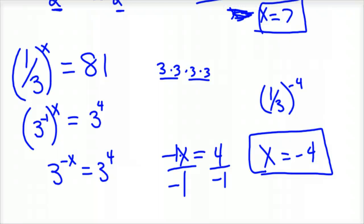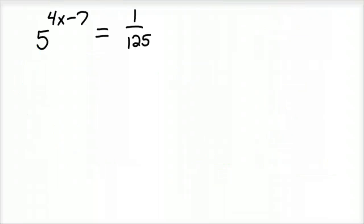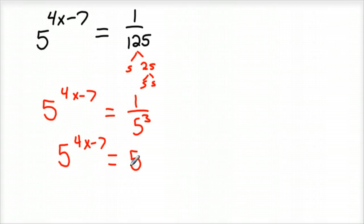I might come up with one more. Here it is. 5 to the 4x minus 7 equals 1 over 125. Again, we have the same base brewing here. 125 is a base of 5. 125 is 5 and 25 and 5 and 5, so 125 is 5 to the 3rd. We've got 5 to the 4x minus 7. On this side we have 1 over 5 to the 3rd. We could use a negative exponent so we have a base 5. So what we have is 5 to the 4x minus 7 equals 5 to the negative 3rd.